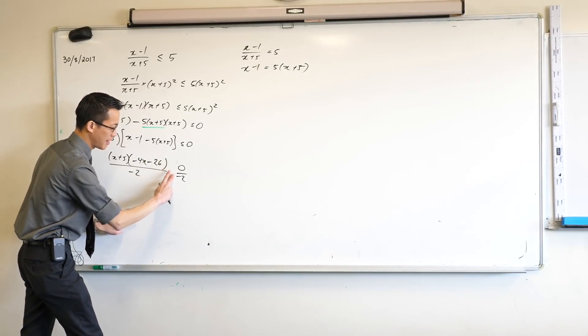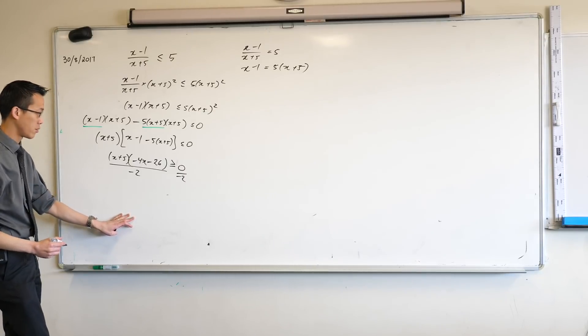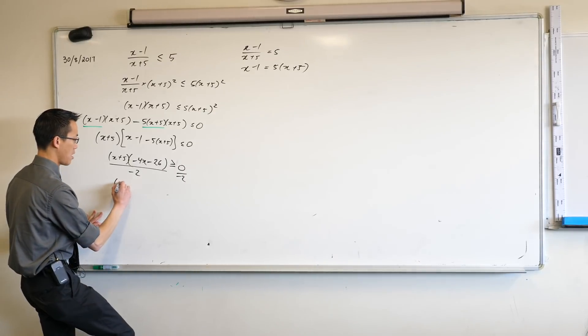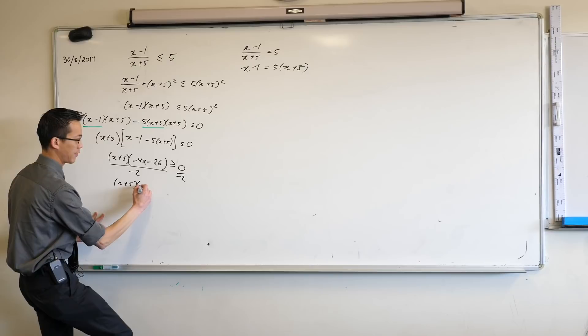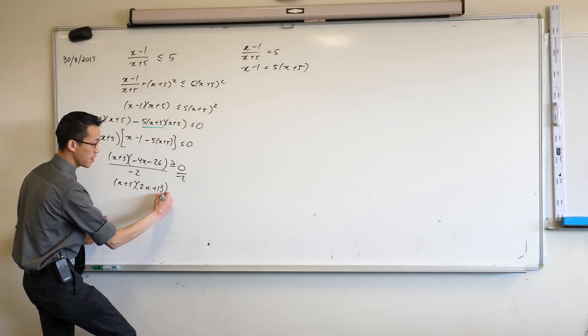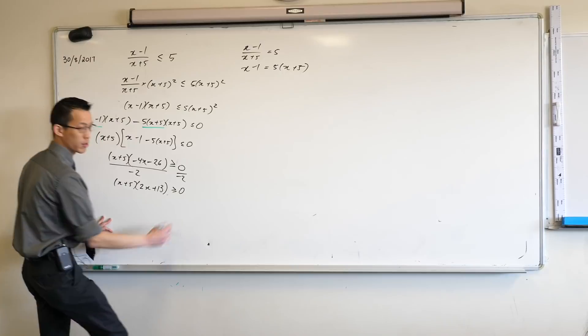So since I've divided by a negative number, just watch out, I've got to change that inequality. Now I can simplify. I get x plus 5, I'm left with 2x plus 13, and I want that to be greater than or equal to 0.